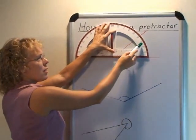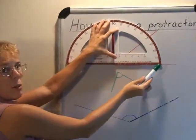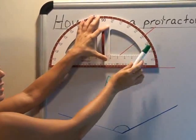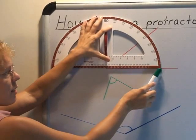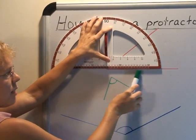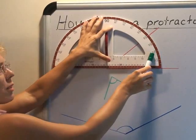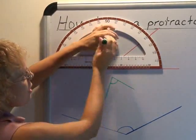One goes from 0, 10, 20, 30, 40, 50, 60. The other one is 170, 160, 150. And so I use the set of numbers where 0 is for this line. 0 would be here so 10, 20, 30, 40. This is 40 degrees.